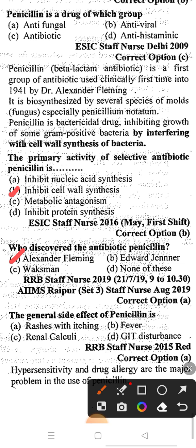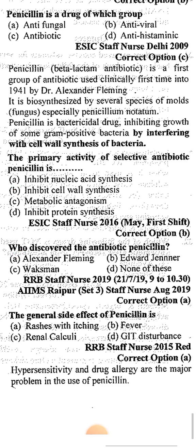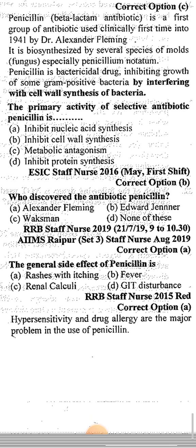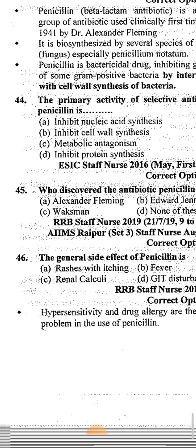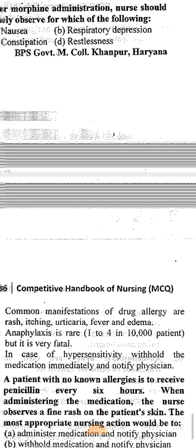The next question: the general side effect of penicillin is — Option A: rashes with itching, Option B: fever, Option C: renal calculi, Option D: GIT disturbance. The correct answer is option A, rashes with itching. Hypersensitivity and drug allergy are the major problems in the use of penicillin.